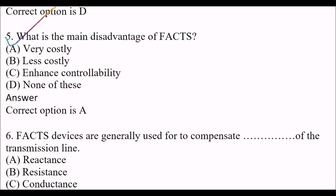Next question: What is the main disadvantage of FACTS? Option A: Very Costly. Option B: Less Costly. Option C: Enhanced Controllability. Option D: None of these. The right answer is Option A, Very Costly. The main disadvantage of FACTS is that they are very costly.